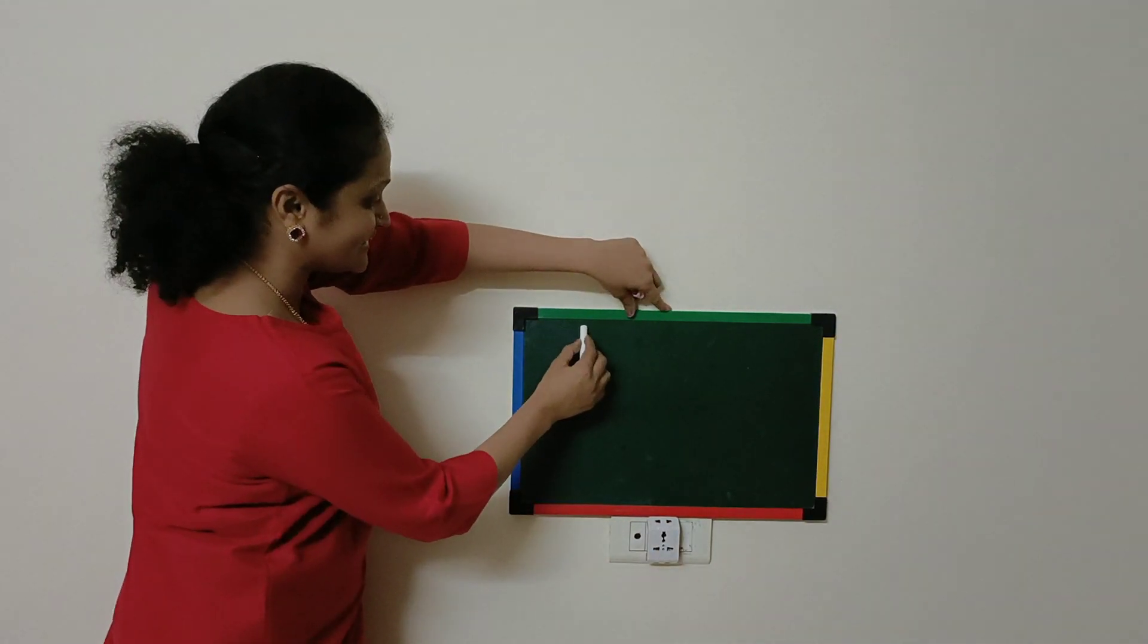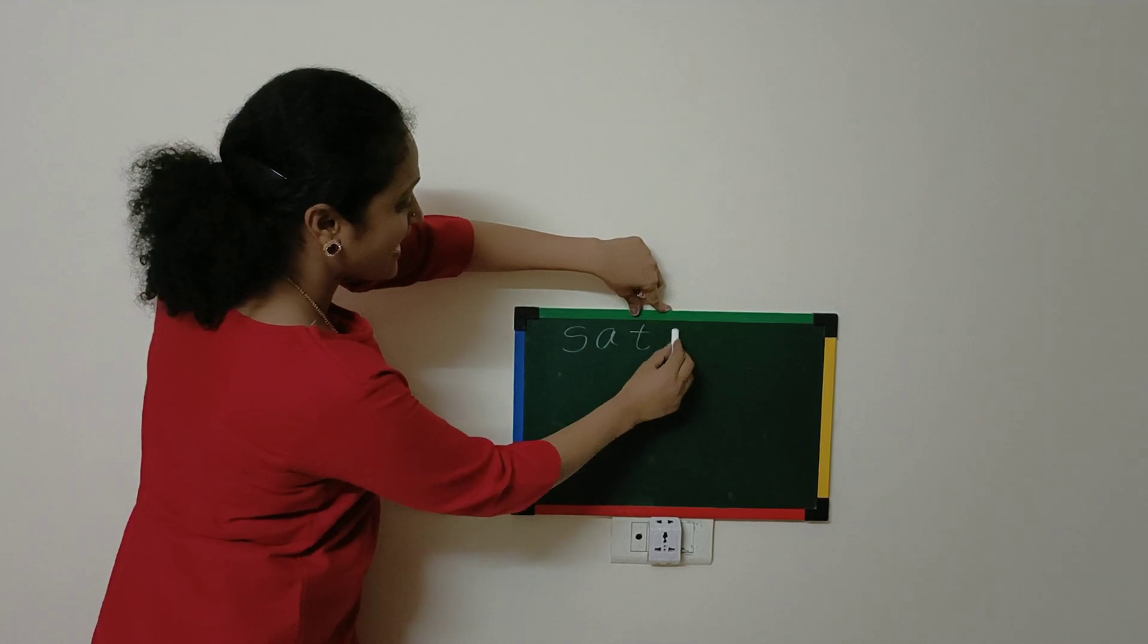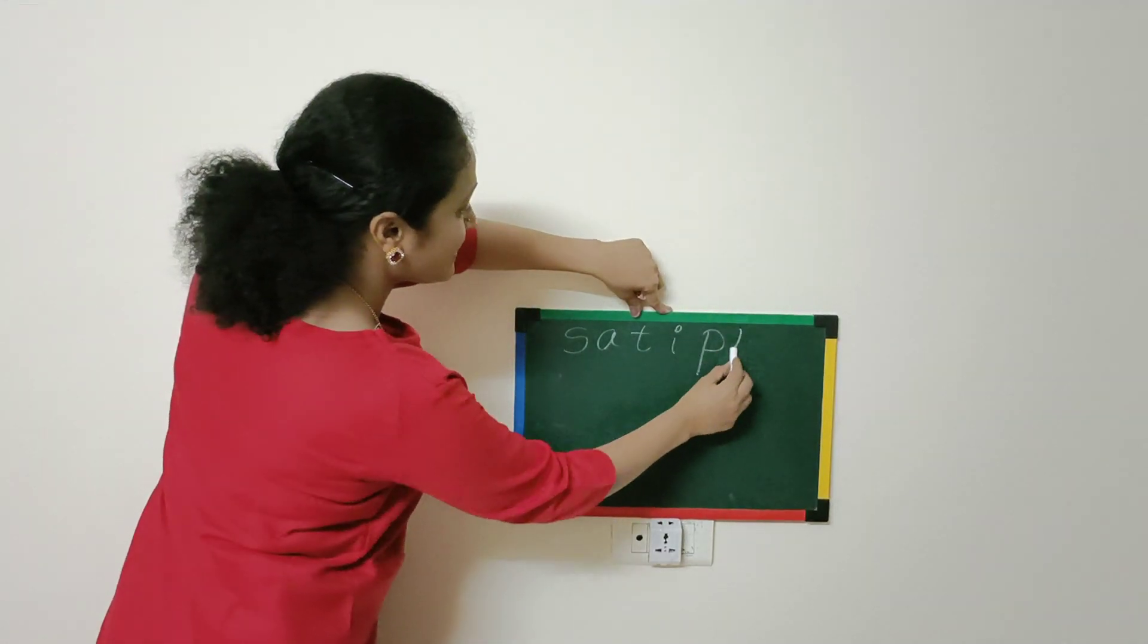Today we are going to learn blends and word formation. Blends - what are blends? Joining two letter sounds forms a sensible word. We will take these six letters today: S, A, T, I, P, N.